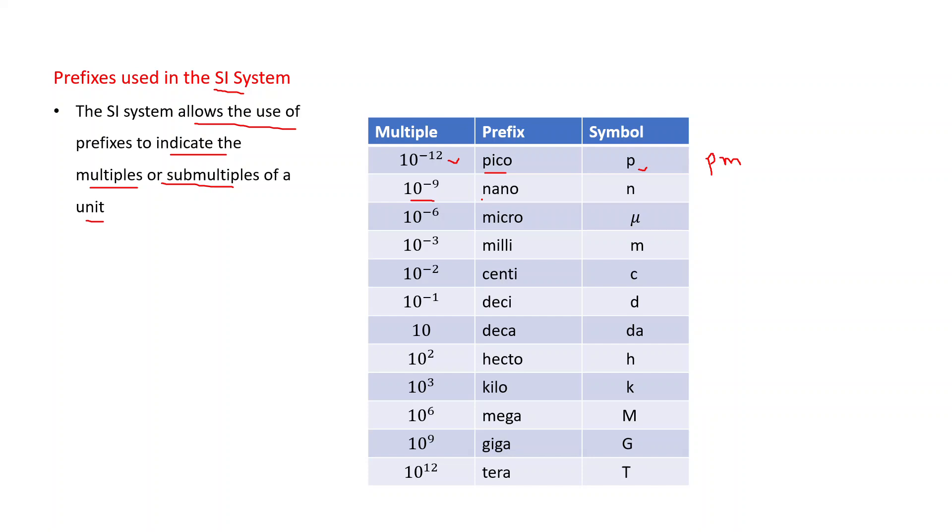In the same way, 10 to the power minus 9, nano, this is small n. 10 to the power minus 6, micro, this is the symbol for micro. 10 to the power minus 3, milli, this is small m. 10 to the power minus 2, centi, c. Again, you are familiar with this centimeter. That is 10 to the power minus 2 meter.